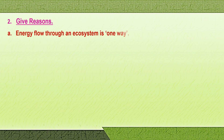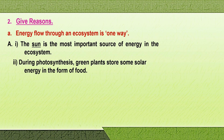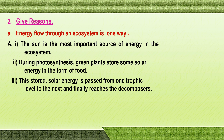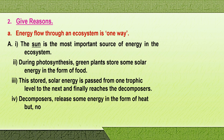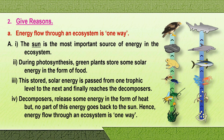Question three: give reasons. First one — energy flow through an ecosystem is one way. The sun is the most important source of energy in the ecosystem. During photosynthesis, green plants store some solar energy in the form of food. This stored solar energy is passed from one trophic level to the next and finally reaches the decomposers. Decomposers release some energy in the form of heat, but no part of this energy goes back to the sun. Hence we say that energy flow through an ecosystem is one way.